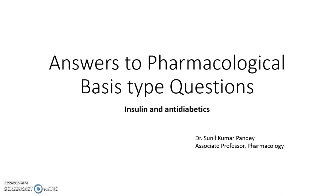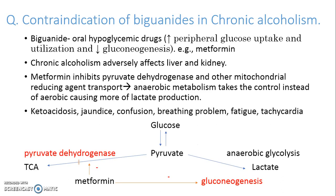The very first, very important pharmacological basis type question is: why are biguanides contraindicated, or should be given with great precaution, in chronic alcoholism?